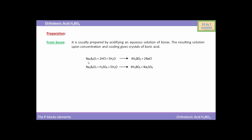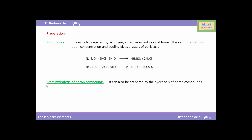Here are the reactions. Na₂B₄O₇ (borax) when reacted with HCl and water yields H₃BO₃ (boric acid) and NaCl. Similarly, when borax Na₂B₄O₇ reacts with H₂SO₄ (sulfuric acid) and water, the reaction yields orthoboric acid H₃BO₃ and Na₂SO₄ (sodium sulfate).